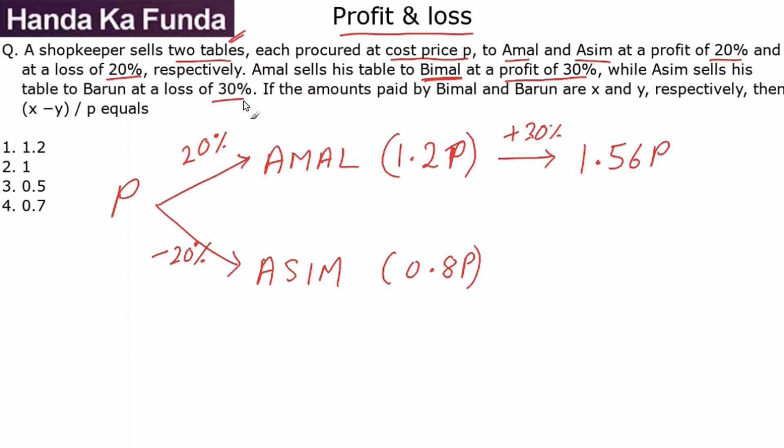Asim sells his table to Barun at a loss of 30%. So now I remove 30% from it. 30% of 0.8 is 0.24, and 0.8 minus 0.24 is 0.56p. This is the price at which Asim sold to Barun.